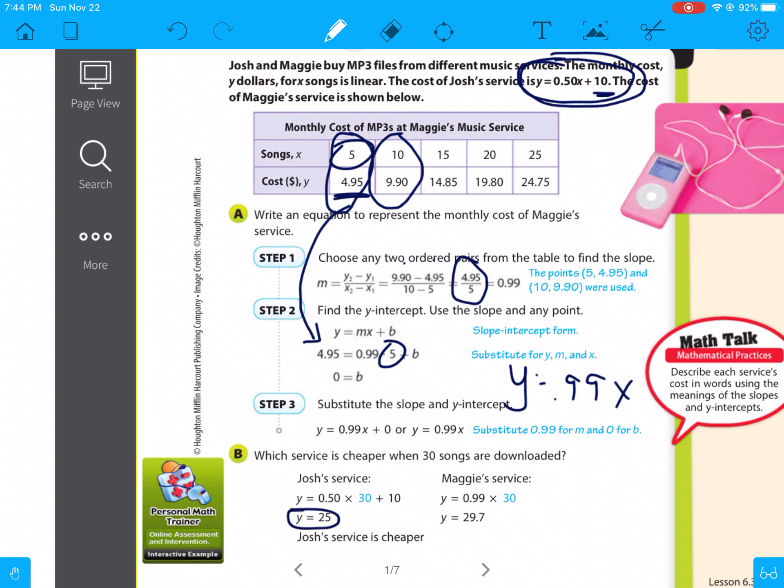For Maggie's service, it's going to be 99 cents times 30, which is $29.70. So Josh's service will be cheaper. So you're going to just do everything that you know how to do, but turn them both into equations so you can compare them easier.